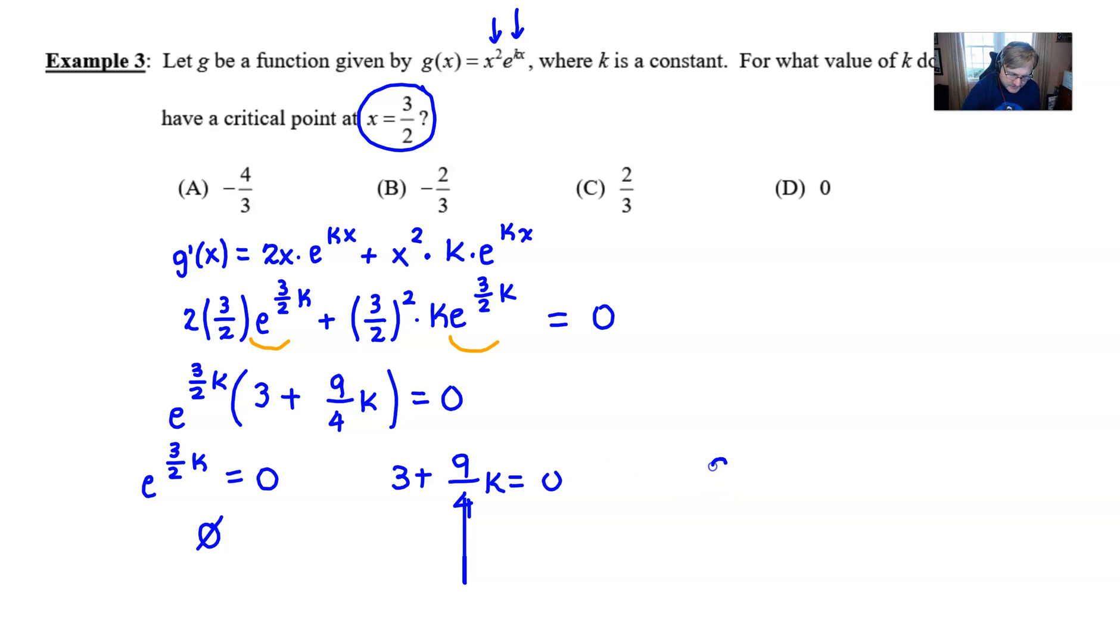Now over here on the other side I'm going to solve by subtracting three over to the right and then I'll multiply both sides by four over nine the reciprocal and upon doing that I could cancel my three and my nine and I would get negative four thirds for k and as it turns out that is one of our options and it is the correct option.